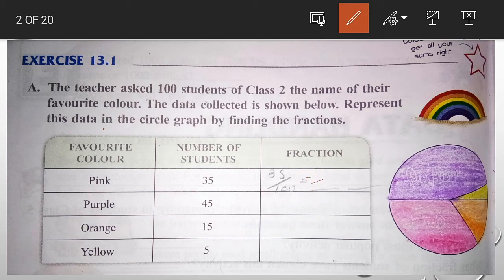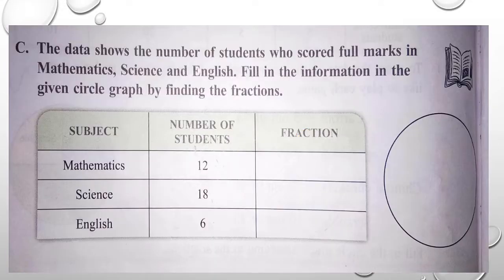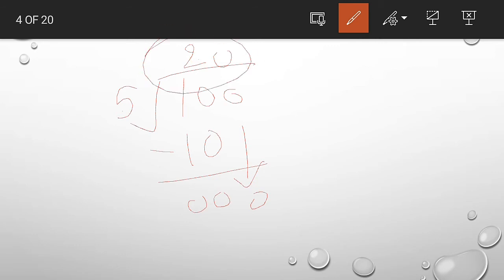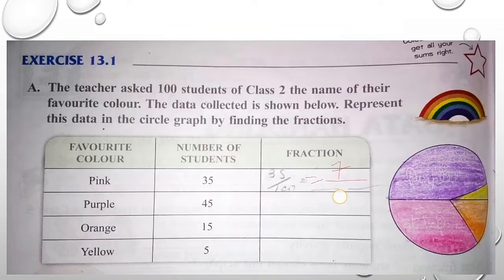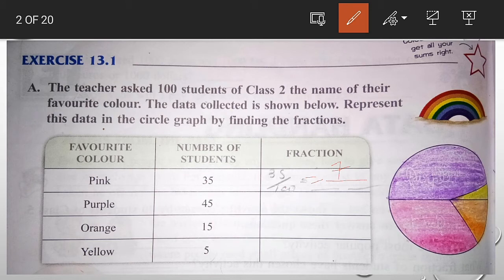So what answer will be? If 5 times 7 is 35, so here is 7 in numerator. For denominator, if 100 divided by 5, 5 into 10 is 10, minus 0, 0, 0, so how much answer? 20. So here in denominator I will write 20.